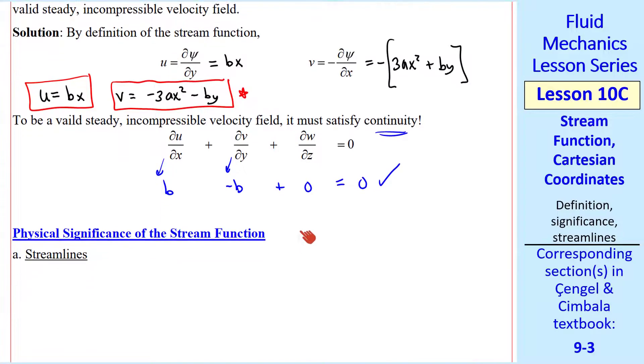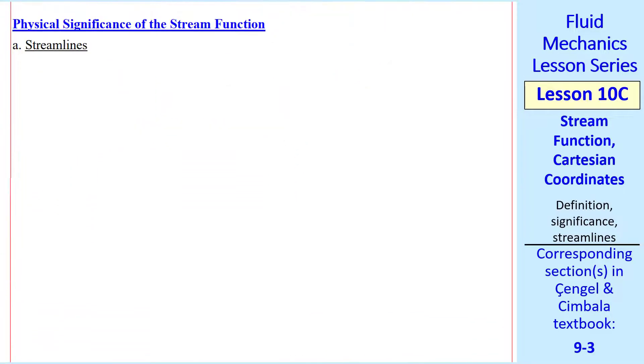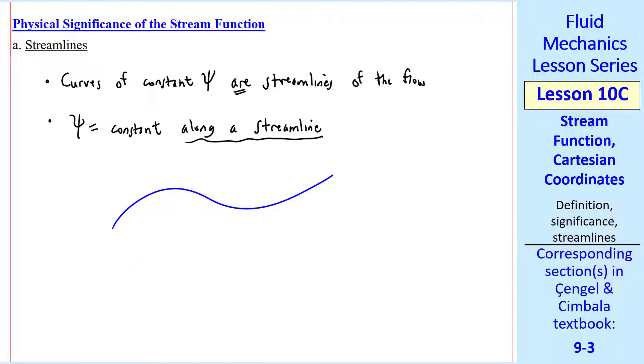Now let's look at the physical significance of the stream function. First, in terms of streamlines, it turns out that curves of constant psi are streamlines of the flow. In other words, psi is a constant along a streamline. So if we have some flow with these streamlines, with flow in this direction, each streamline has a different value of stream function psi.